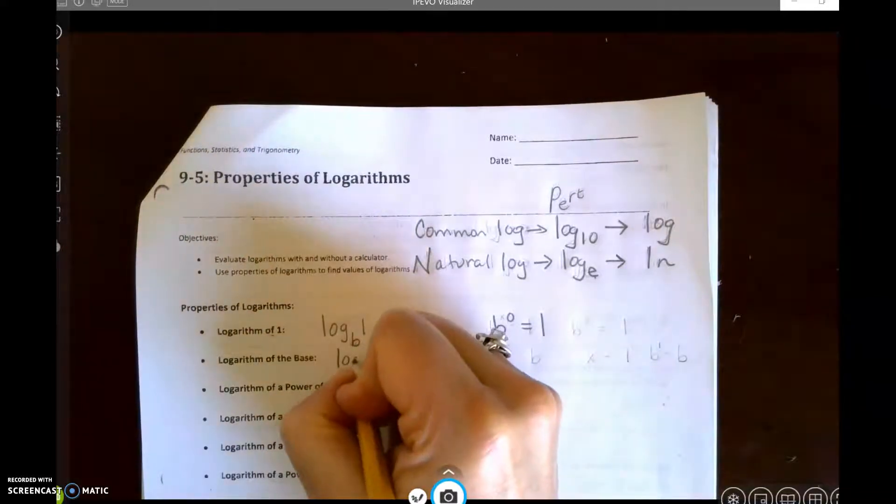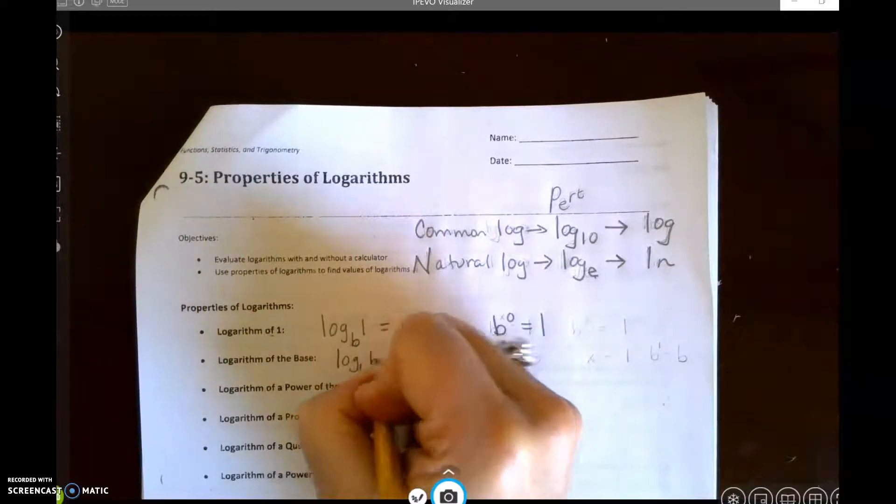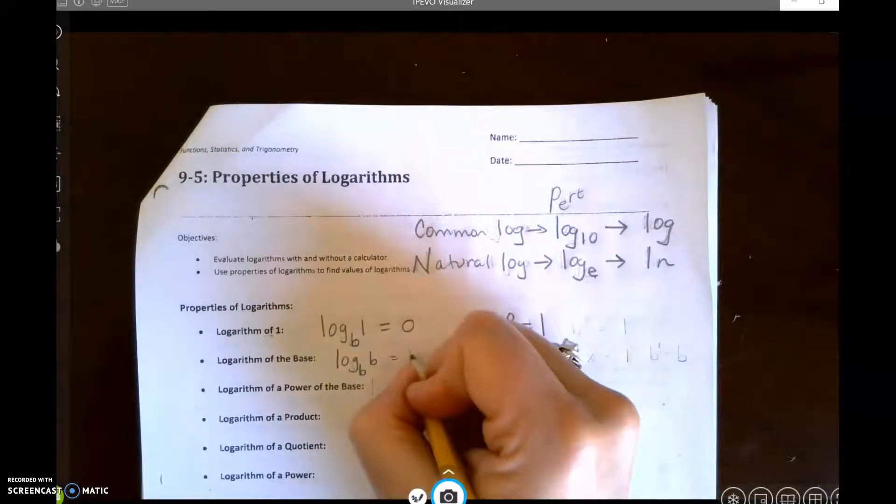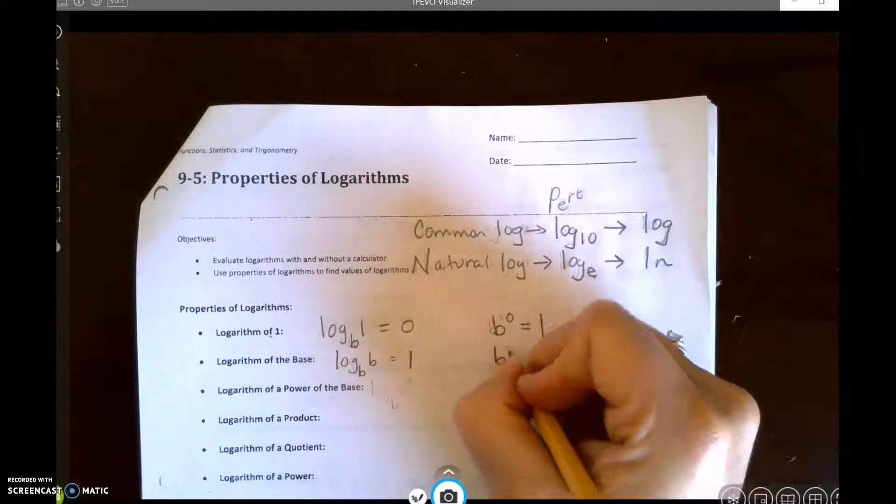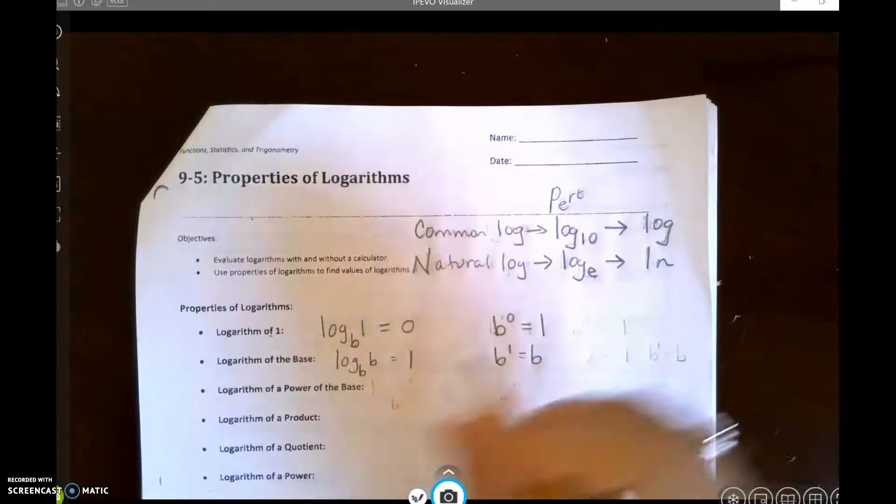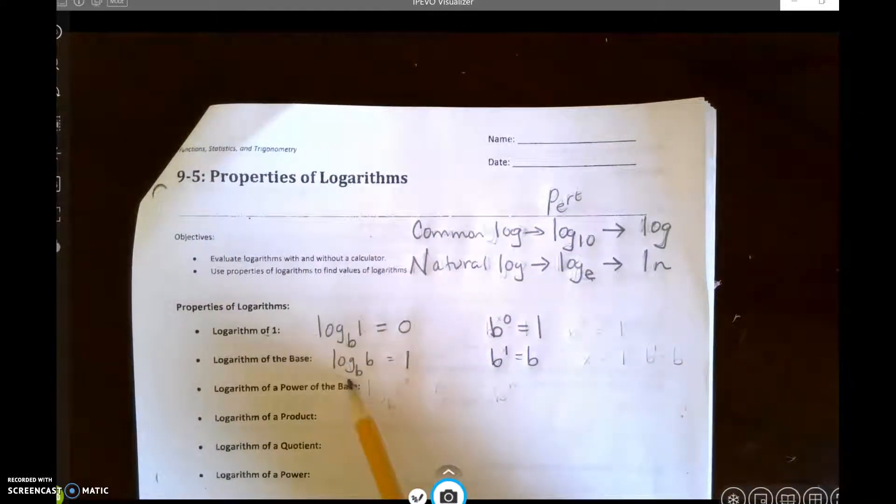Logarithm of the base. Log base b of b is simply going to be 1, and that's because b to the 1 is b. So if these match, then you just get 1.